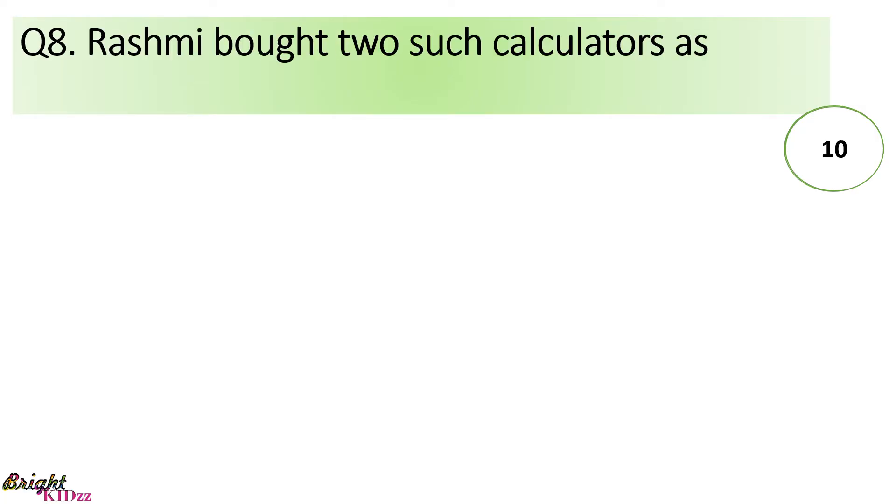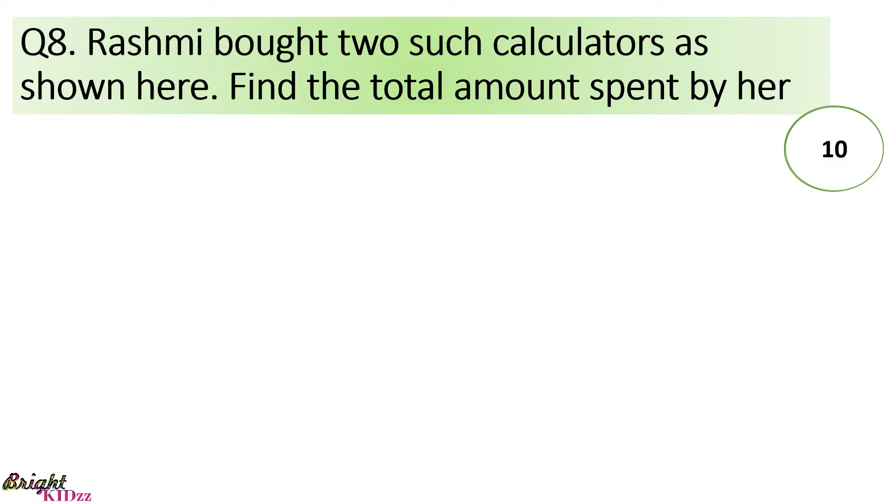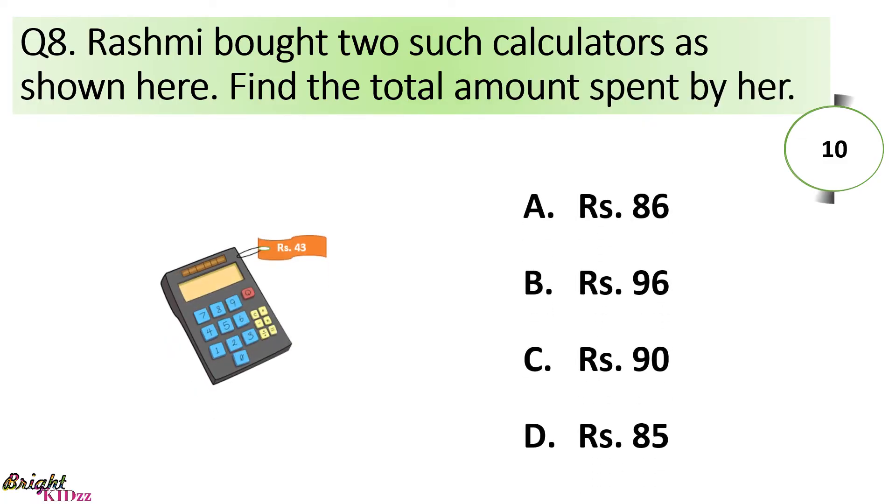Rashmi bought 2 such calculators as shown here. Find the total amount spent by her. 1 calculator is 43. So, 2 calculators will be 43 plus 43 equals to 86.